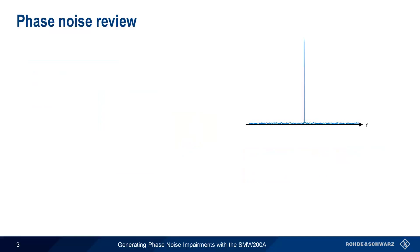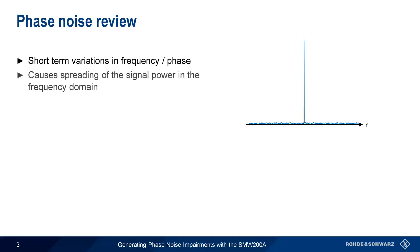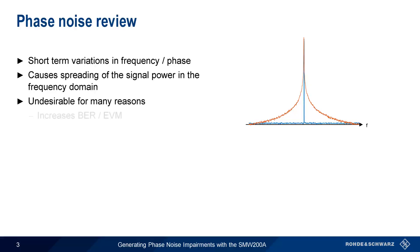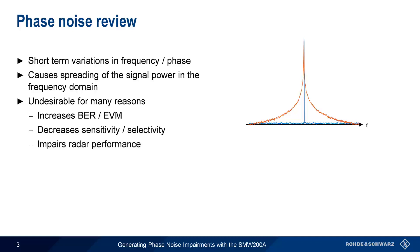Let's start with a short review of phase noise. Phase noise is undesired short-term variation in a signal's frequency or phase. When viewed in the frequency domain, phase noise manifests itself in the form of sidebands or skirts around the carrier. In almost all cases, phase noise is undesirable because it can create problems such as increased bit error rates or EVM in digital modulation systems, decreased sensitivity and selectivity in receivers, and various types of impairments in radar systems.